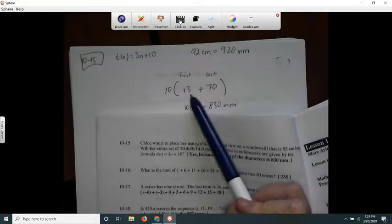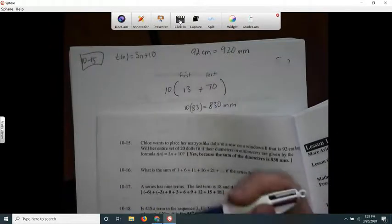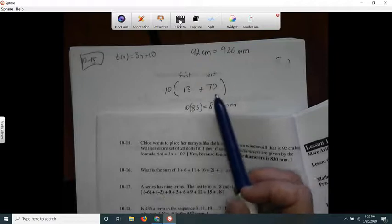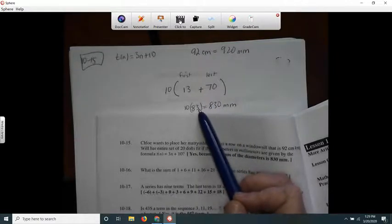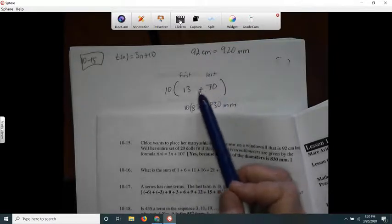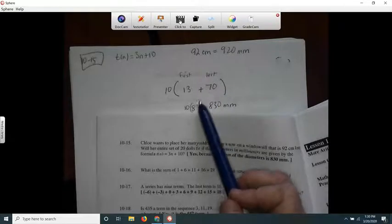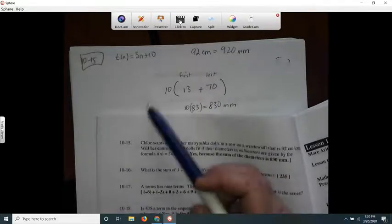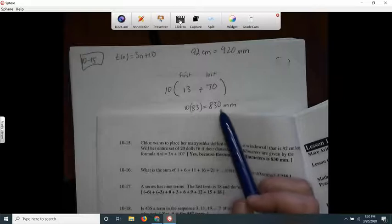That's how I got the first and last terms. And then I know that's going to add up to 83 and there's going to be 10 pairs of 83. So I got 830.